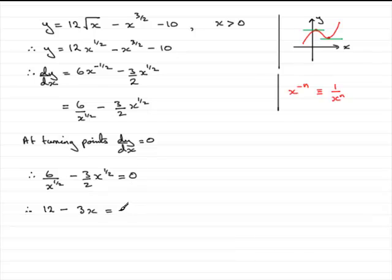And then 0 times anything is going to be simply 0. So, rearrange this by adding 3x to both sides and you end up with 12 equals 3x. Divide both sides now by 3 and you have x equals 4.